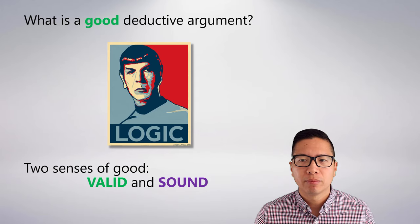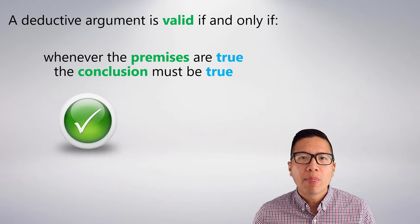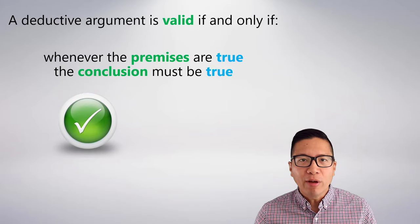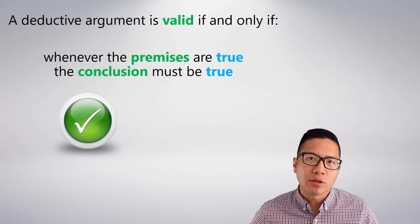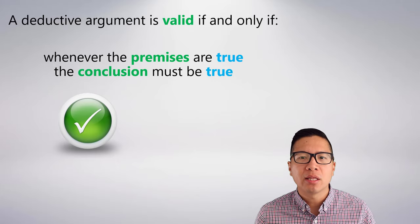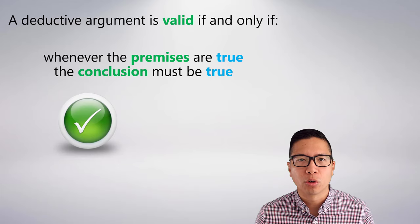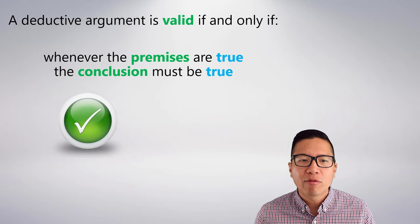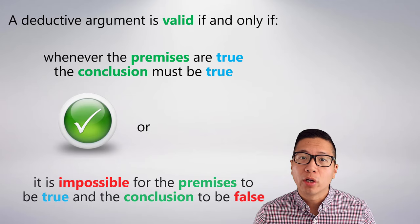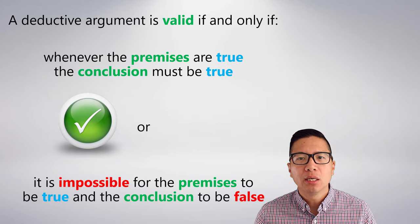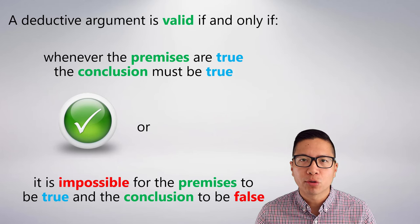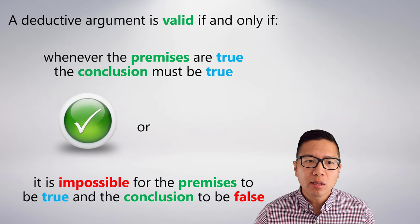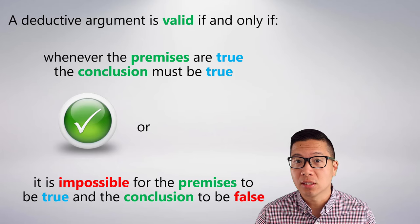We're going to focus on validity. Here's the definition. I don't want you to think you have to memorize this definition immediately — eventually you will know it very well — but the way we're going to understand and learn this concept is by looking at a lot of examples. Here's the definition: a deductive argument is valid if and only if whenever the premises are true, the conclusion must be true. Equivalently, it is impossible for the premises to be true and the conclusion to be false at the same time. If you think about it, you'll realize these two conditions are essentially the same — they're perfectly equivalent.